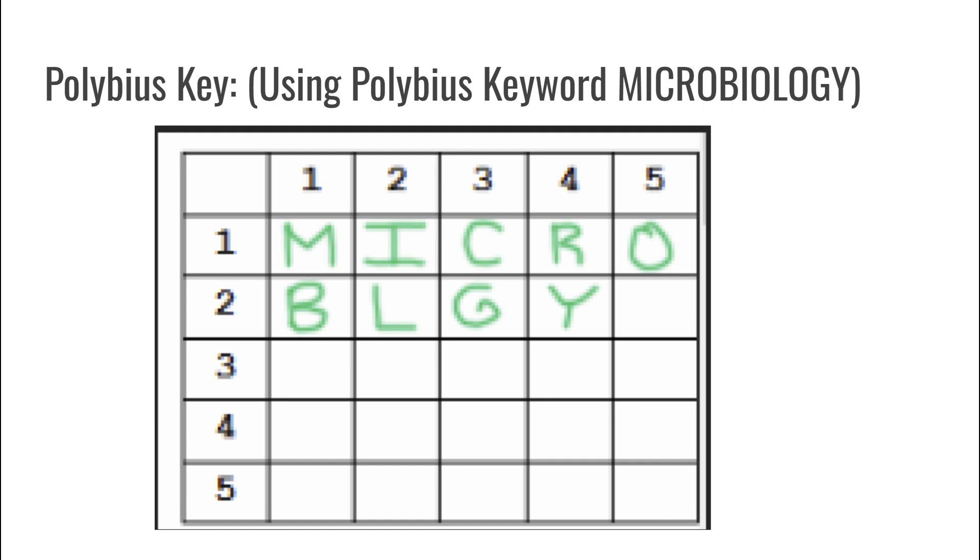Another thing that you should keep in mind is that i is also known as j. These are both in the same box since there are 26 letters and 25 boxes in total. So whenever you write down i you will also be writing j in the same exact box.